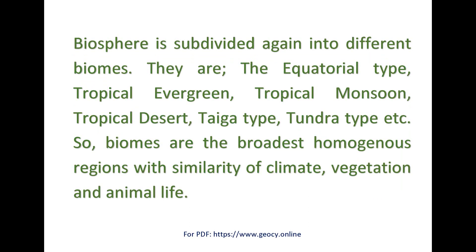Biosphere is subdivided again into different biomes. They are the equatorial type, tropical evergreen, tropical monsoon, tropical desert, taiga type, tundra type, etc. So, biomes are the broadest homogenous regions with similarity of climate, vegetation, and animal life.